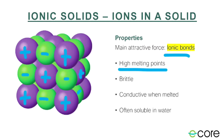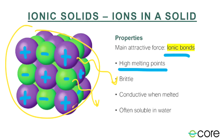Ionic solids have very high melting points, and we can actually understand that based on the structure. If I'm going to melt this thing, all of these atoms are going to start to flow around. That means our negatively charged things are going to flow around next to other negatively charged things, and positively charged things are going to flow around next to other positively charged things. Getting them to a liquid phase where like charges are next to each other takes a lot of energy, because like charges repel. So they have a high melting point.